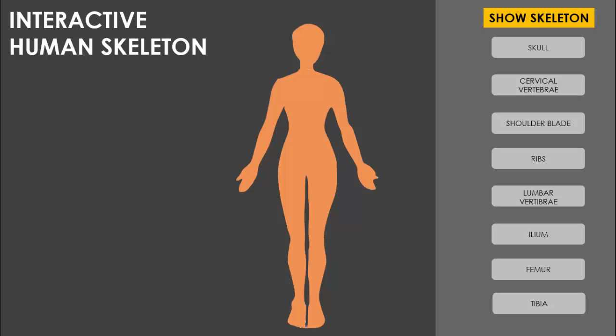In today's tutorial I'm going to show you how to create an interactive human skeleton template in PowerPoint. As you can see, I have created this — it doesn't look like the skeleton, but when I click on the 'Show Skeleton' button, the skeleton will appear. Depending on your requirement, you can just click any of the buttons so that particular section of the skeleton will be highlighted.